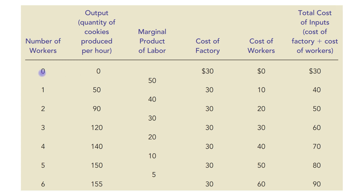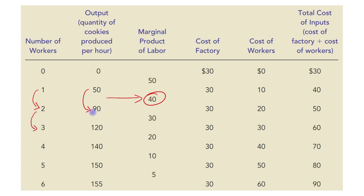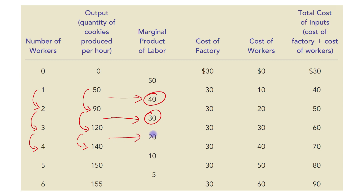When the number of workers increases from 1 to 2, the quantity of output increases from 50 to 90, so the change is 40 — the marginal product of labor is 40. When the number of workers increases from 2 to 3, output increases from 90 to 120, so the change is 30. When workers increase from 3 to 4, output increases from 120 to 140, so the change is 20.